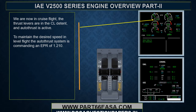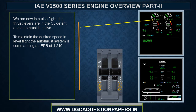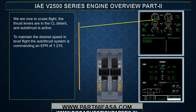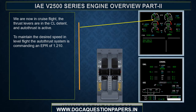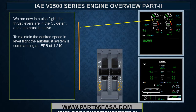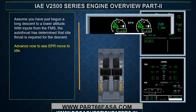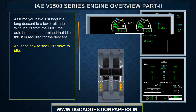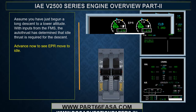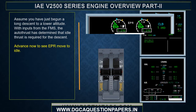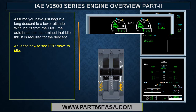We are now in cruise flight. The thrust levers are in the climb detent and the autothrust is active. To maintain the desired speed in level flight, the autothrust system is commanding an EPR of 1.210. With inputs from the FMS, the autothrust has determined that idle thrust is required for the descent.